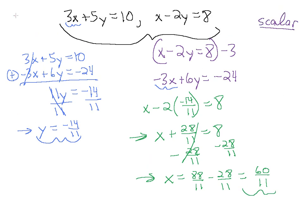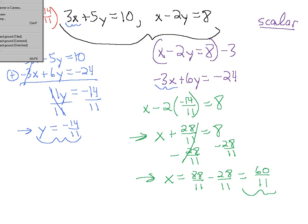Now we can write our solution to the system. We have x is 60 over 11 and y is minus 14 over 11. We can check that this is the exact solution by plugging 60 over 11 for x and minus 14 over 11 for y into both equations, and both will equal out. Very useful practice to check our answers.